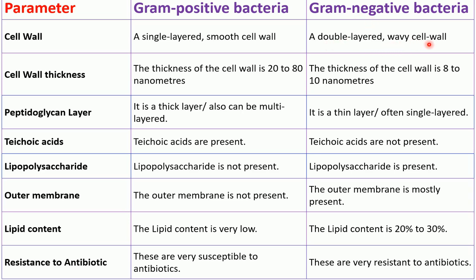Cell wall thickness: for gram-positive bacteria, the thickness of the cell wall is 20 to 80 nanometers, whereas for gram-negative bacteria the thickness of the cell wall is 8 to 10 nanometers.